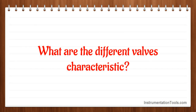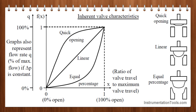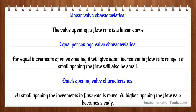What are the different valve characteristics? The different types of valve characteristics are linear, equal percentage, and quick opening. For linear valve characteristics, the valve opening to flow rate is a linear curve. For equal percentage valve characteristics, equal increments of valve opening give equal increments in flow rate range — at small opening the flow will also be small. For quick opening valve characteristics, at small opening the increments in flow rate are more, while at higher opening the flow rate becomes steady.